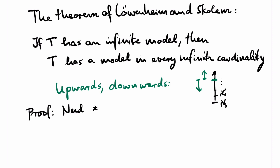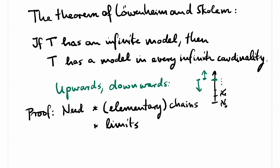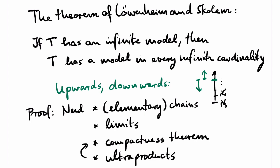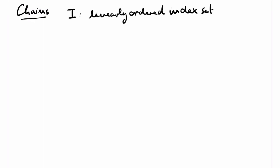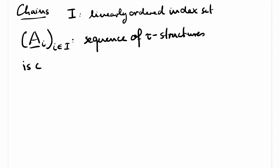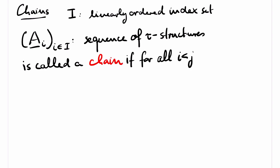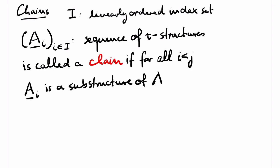In particular, we will introduce elementary chains, limits of elementary chains and limits of chains. We also need the compactness theorem of first-order logic. If you haven't encountered the compactness theorem before, don't worry — we will also prove the compactness theorem. Our proof of the compactness theorem is based on the beautiful ultraproduct construction. To define chains, we need a linearly ordered index set I and a sequence of structures with the same signature indexed by I. Such a sequence is called a chain if for i < j, A_i is a substructure of A_j.